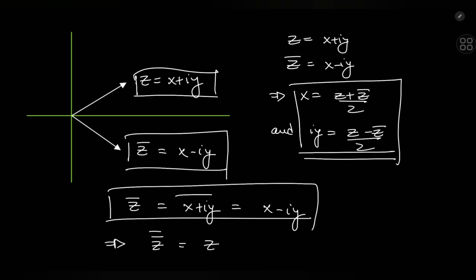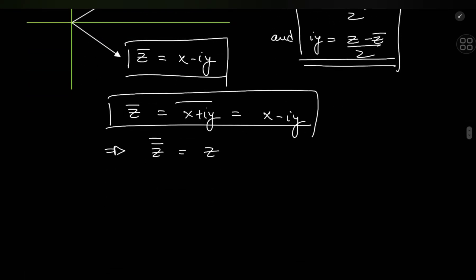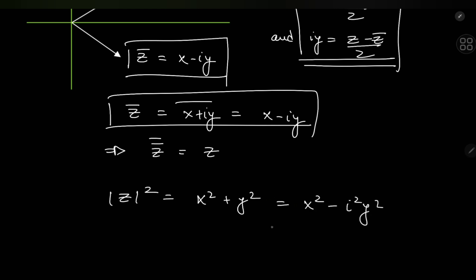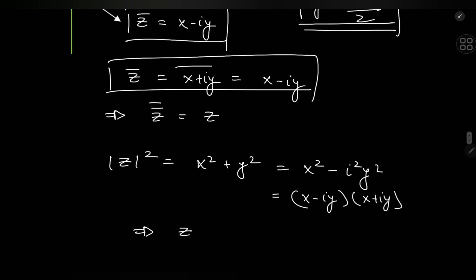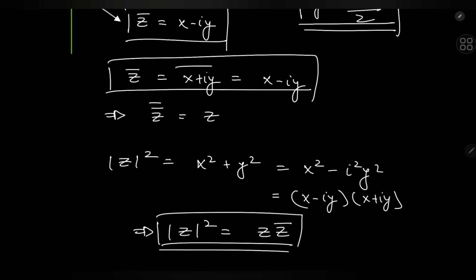That is pretty cool. What about representing the squared modulus of z in terms of its conjugate? We know |z|² = x² + y². Since i² = −1, this equals x² − i²y², which factors in the complex realm as (x − iy)(x + iy), meaning |z|² = z · z̄.